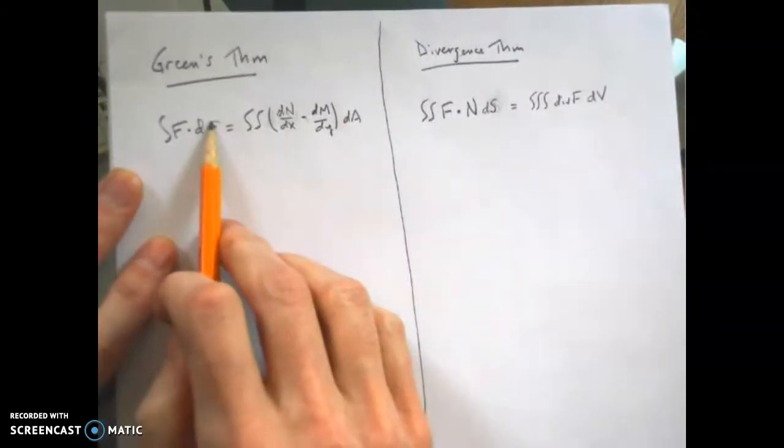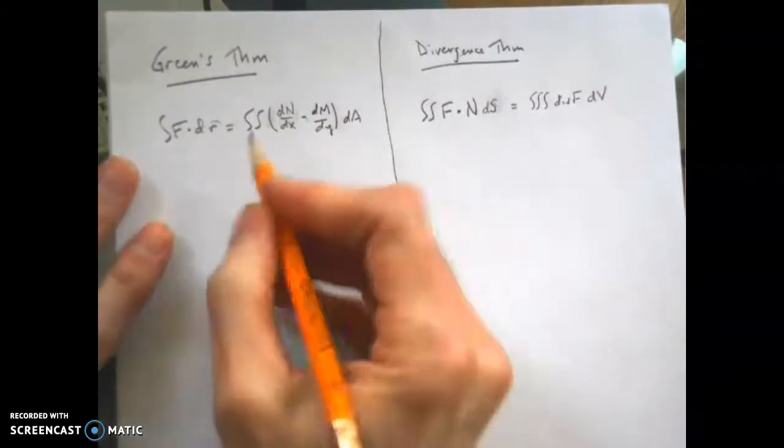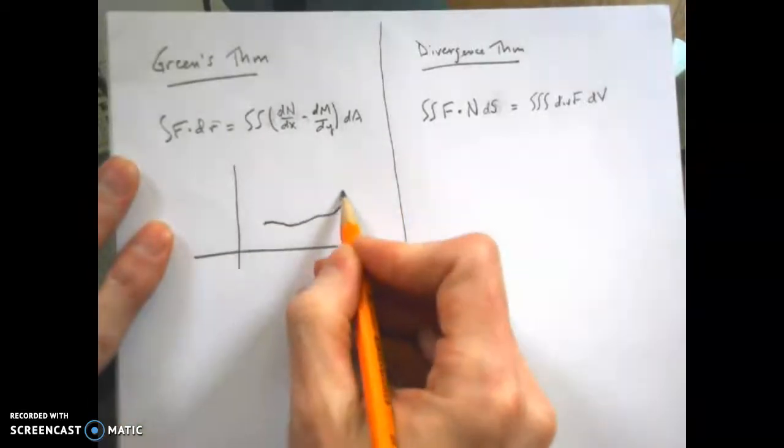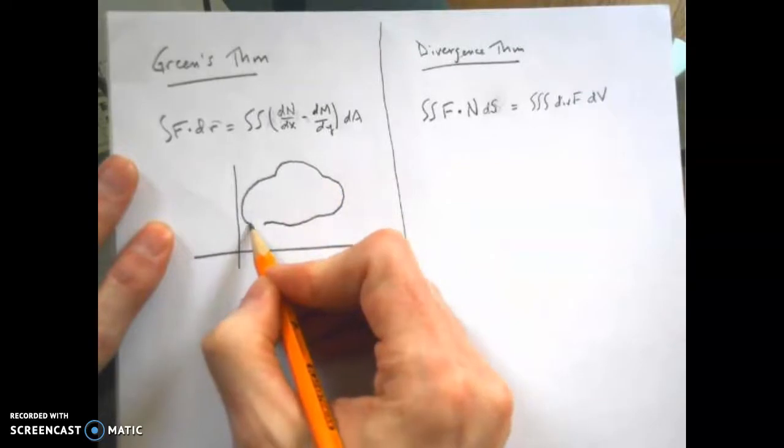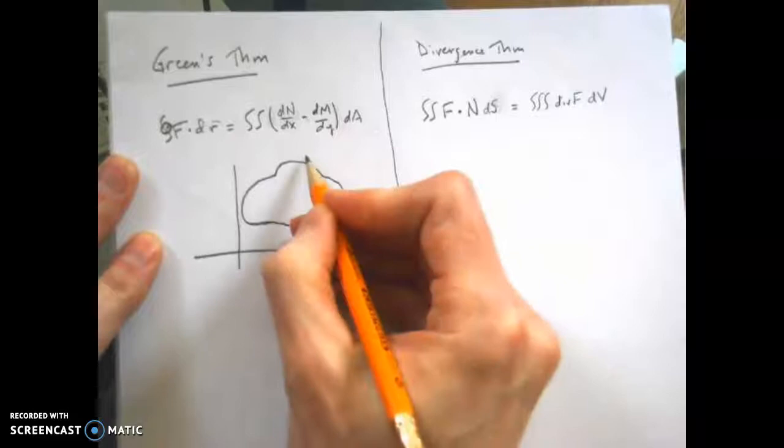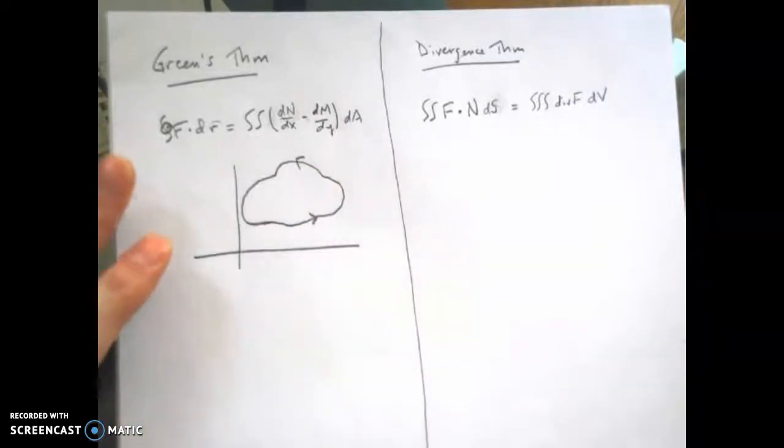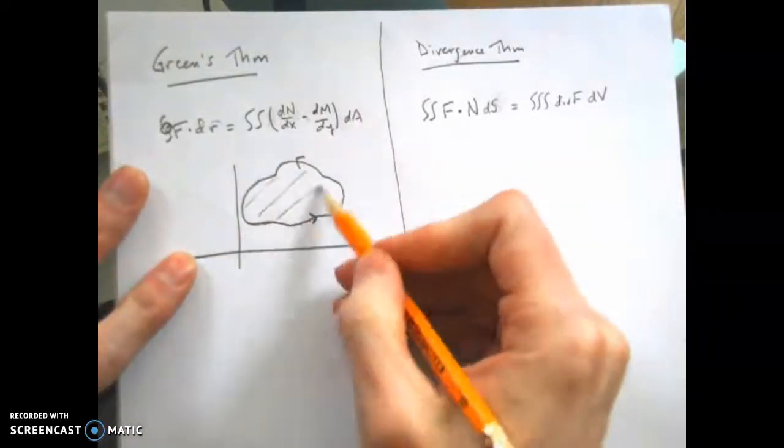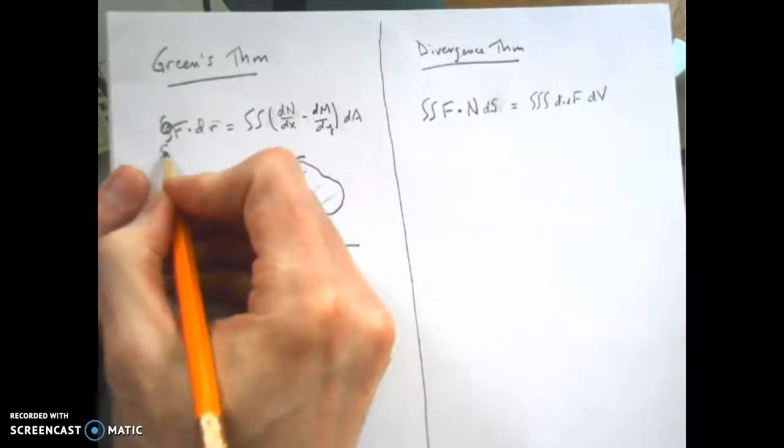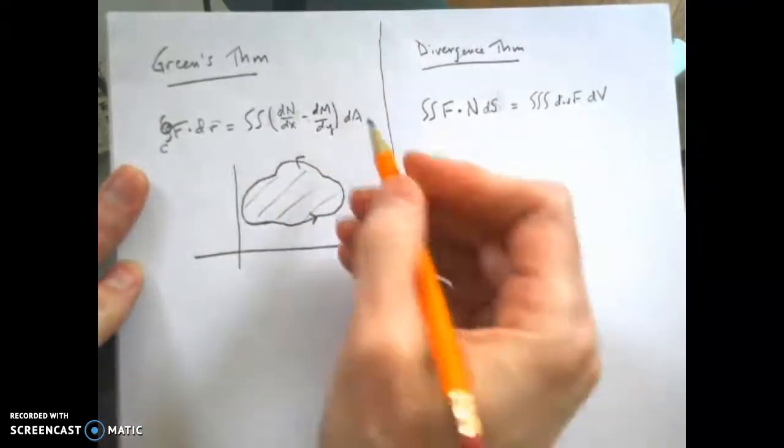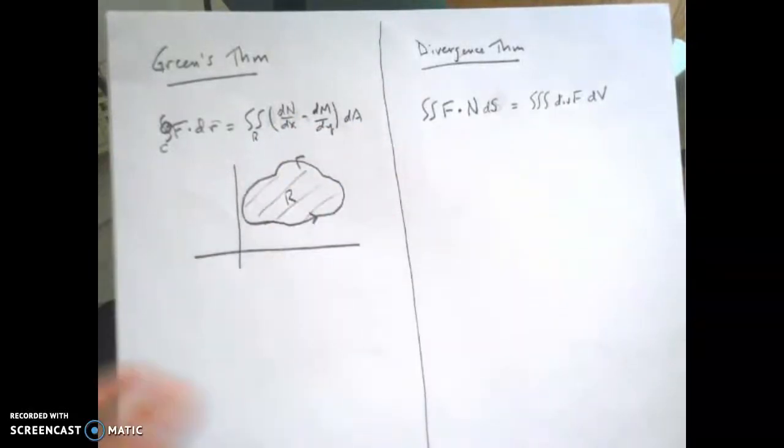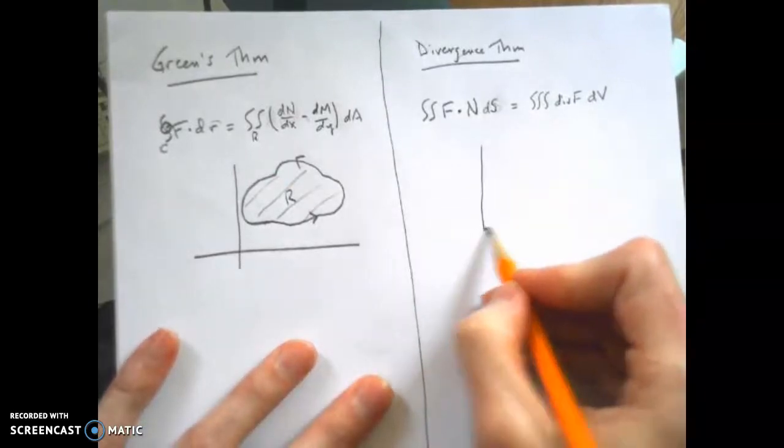The Divergence Theorem says this. Just to remind you, you might have a curve that goes like this, and it has to be a closed curve. This is a positive orientation going counterclockwise, but it encloses this region inside. So this is over a curve, and this is over some region, and this would be the region in here.